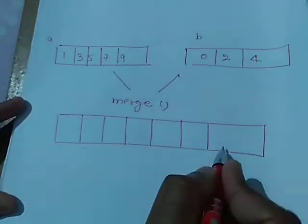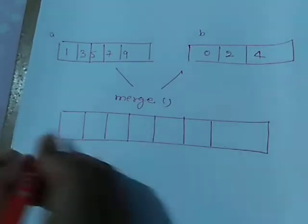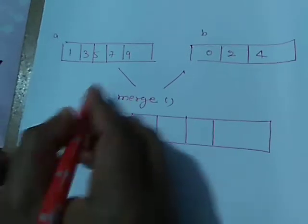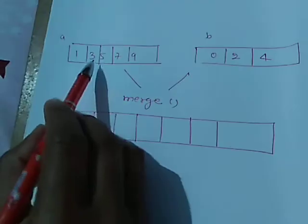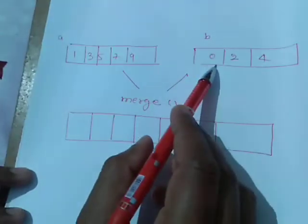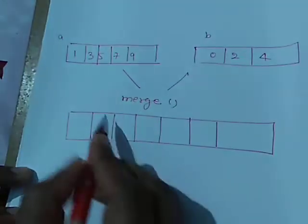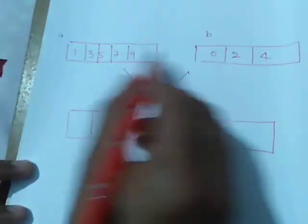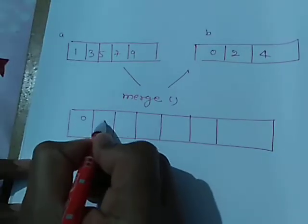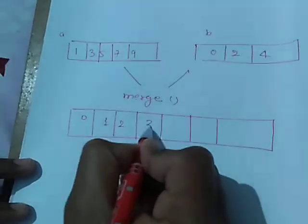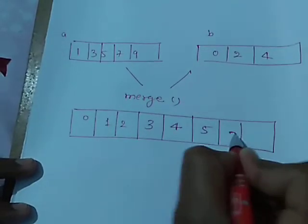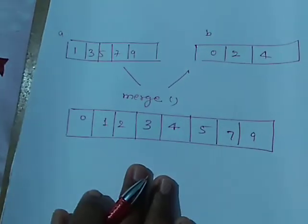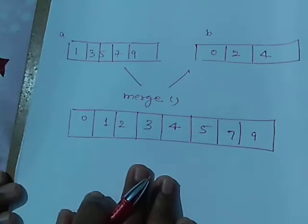At last we get the merged array in sorted order. The number of elements in the merged array is equal to the number of elements in array 1 plus array 2. We compare elements one by one: 0, 1, 2, 3, 4, 5, 7, 9. To merge, we have two methods.